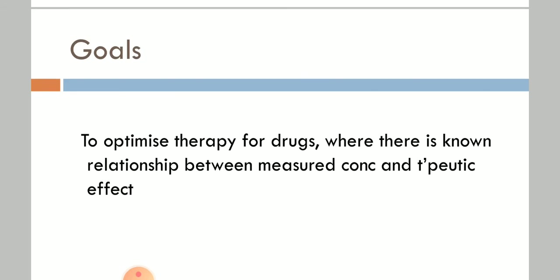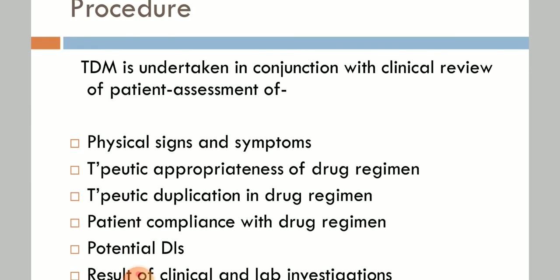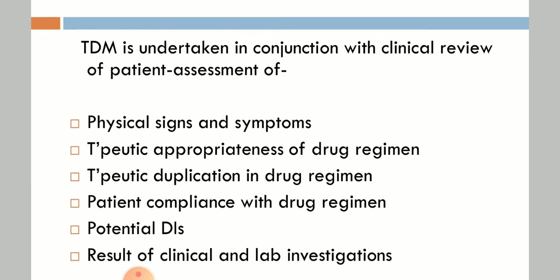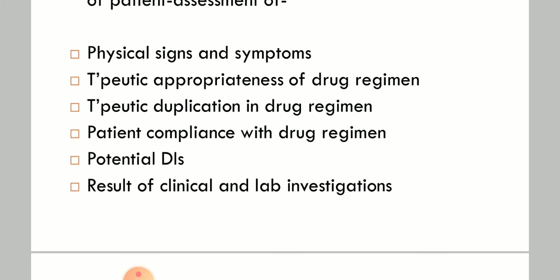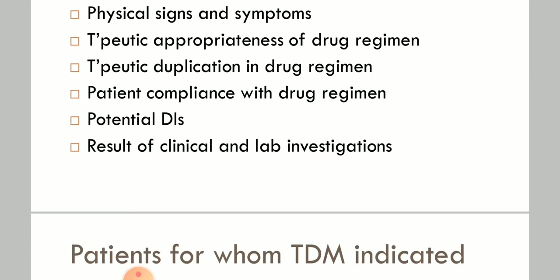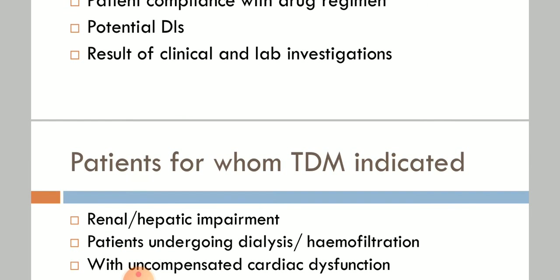The main goal of therapeutic drug monitoring is to optimize drug therapy in conditions where there is a known relationship between the measured concentration and therapeutic effect. The process involves checking physical signs and symptoms, therapeutic appropriateness of the drug regimen, duplication of the drug regimen, compliance with the drug regimen, and potential drug interactions.